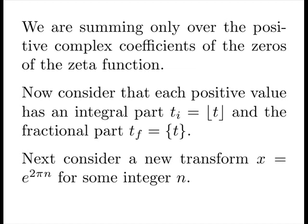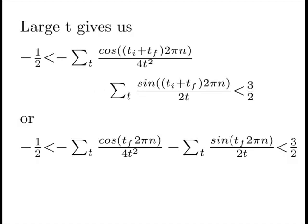Next, consider another transformation that x equals e to the 2 pi n for some integer n. So, large T gives us the following, where we split our zeros into integer and fractional parts, and then show we only have to deal with the fractional part in the trig functions. Amazing, isn't it? Like, drink it in. That's incredible.